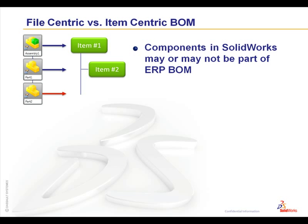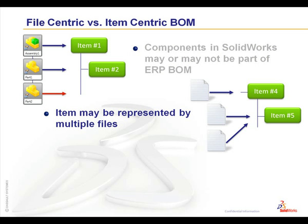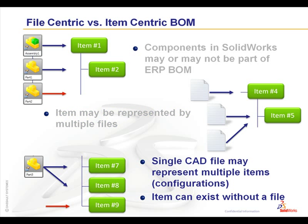To understand this, let's look at a graphical view of how files can relate to items. Some parts in your assembly may not have an item associated to it. More than one file may be a single item. A single file may also represent multiple items, such as configurations of a part that maybe has different sizes or is made from different materials. Also, an item can exist without a file — this would normally be something like paint or grease.